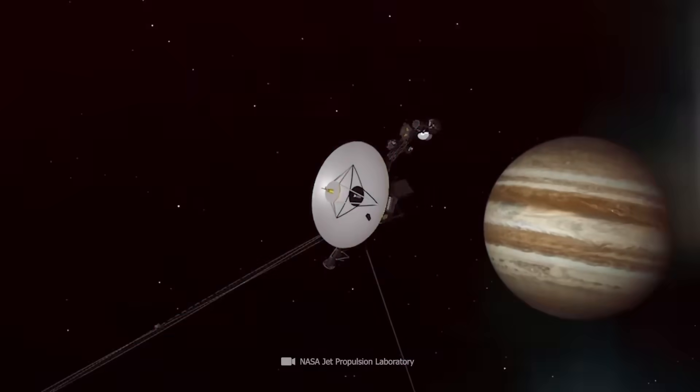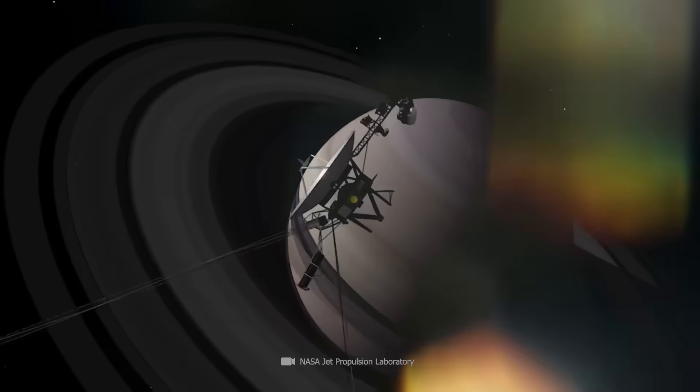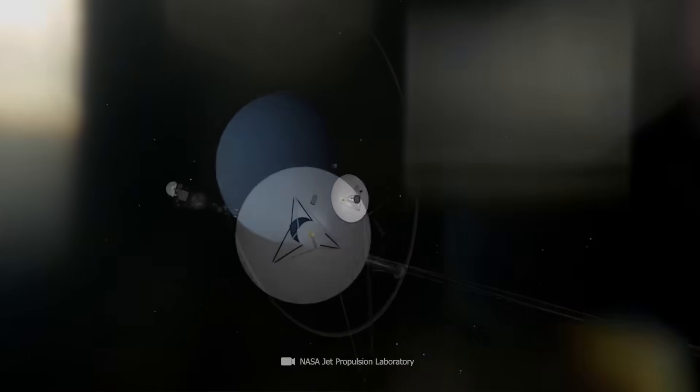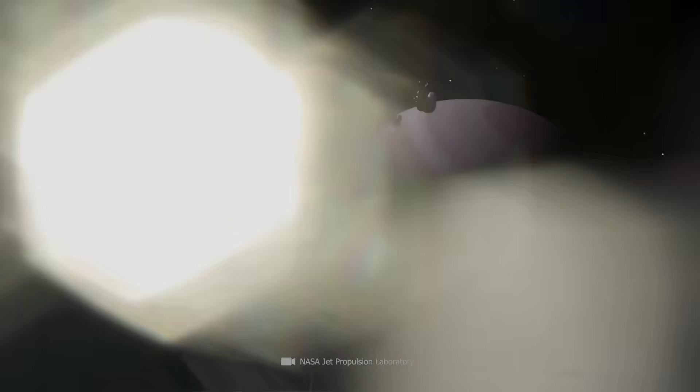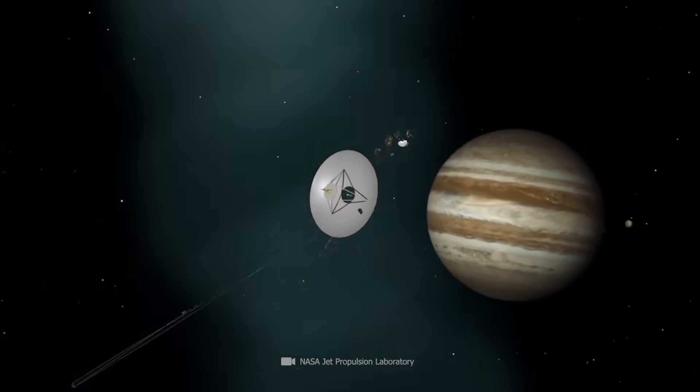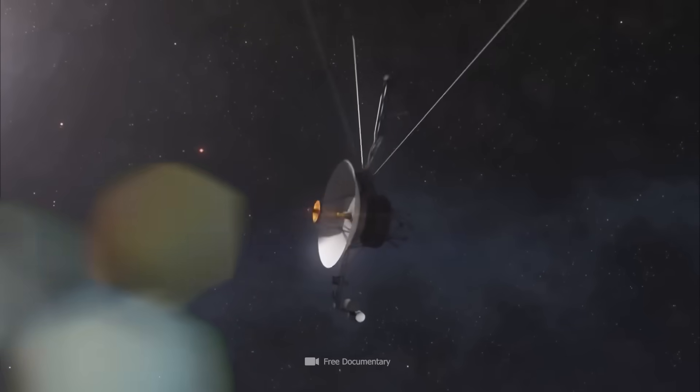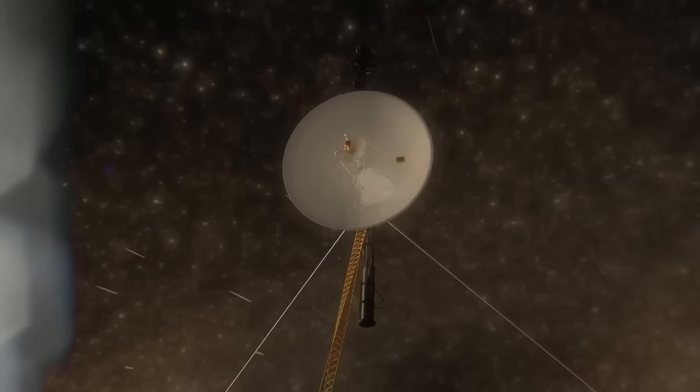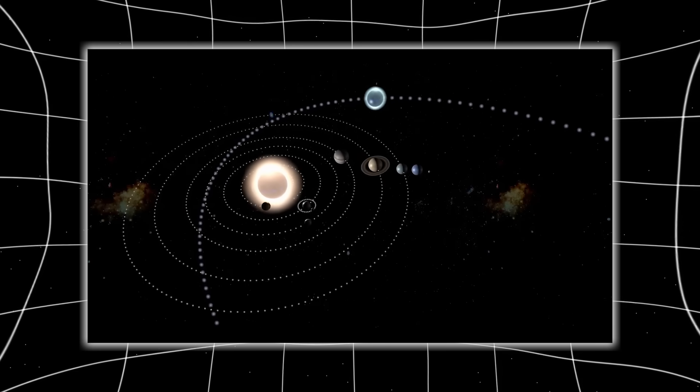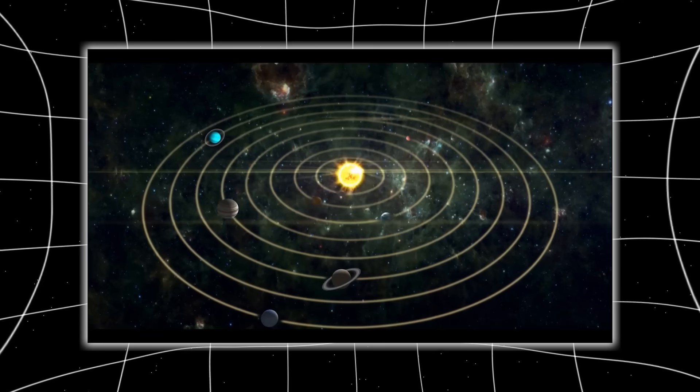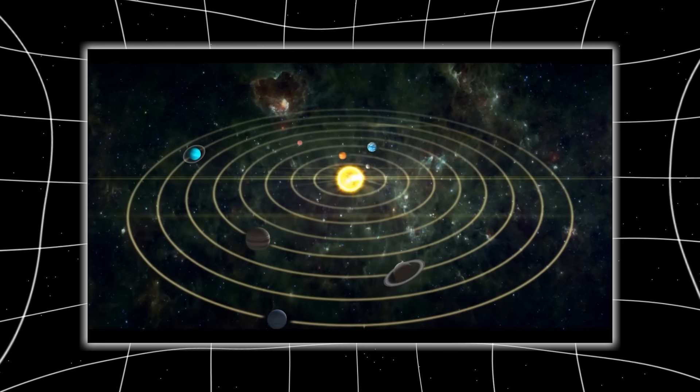When Voyager 2 sent back its most distant magnetometer reading yet, the numbers didn't just plateau, they inverted. The field didn't weaken. It turned. Space itself was folding in ways that defied Newtonian expectation. It was almost as if the probe had passed through a zone where time and energy flexed around it. A lensing effect, but without the mass to explain it.